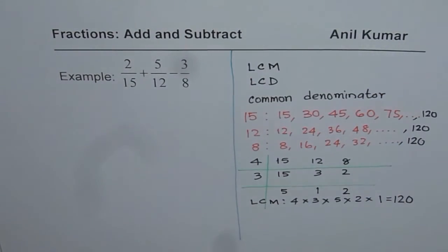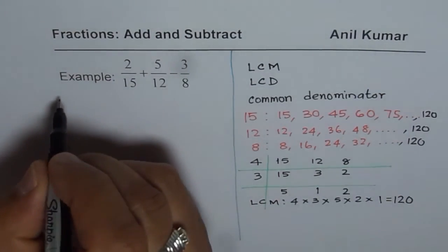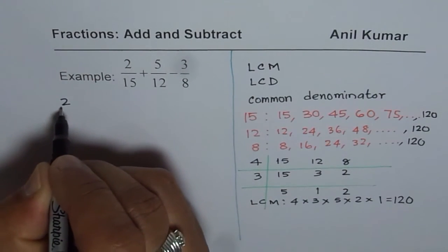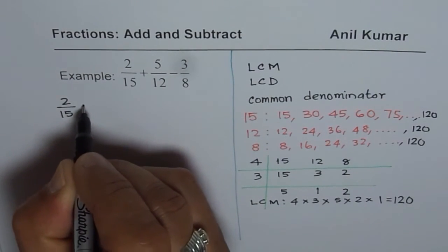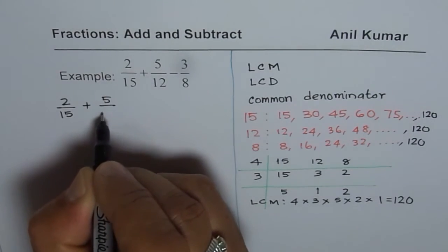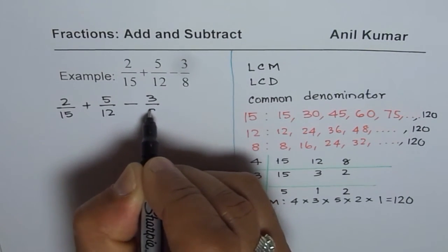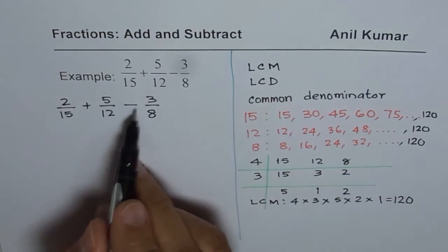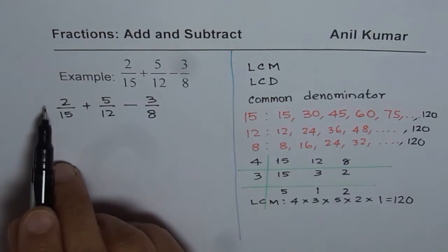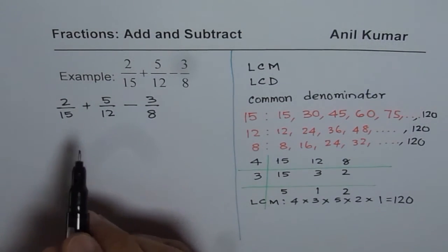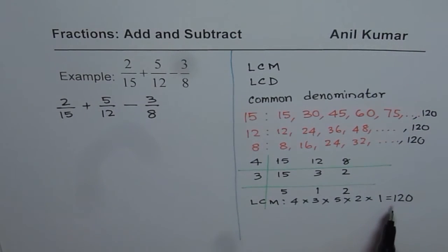Now we will continue with this solution. What we need to do is we need to add 2 over 15 to 5 over 12 and subtract 3 over 8. Whenever addition and subtraction is done you should actually do from left to right. Now, we know least common denominator is 120.